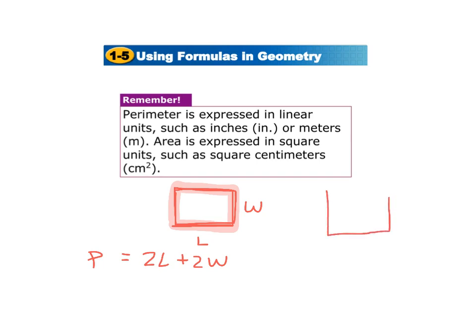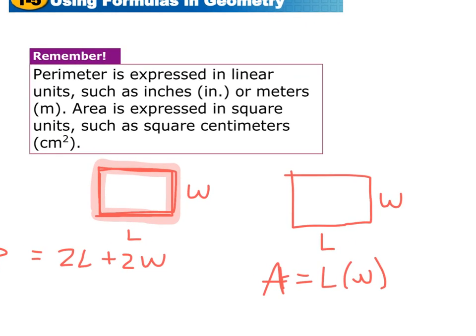For the area of a rectangle, we multiply length times width. Length is in inches and width is in inches, so the result is inches squared — inches times inches. When talking about houses, you hear people say it's measured in square feet, which is all the square footage the house sits on.